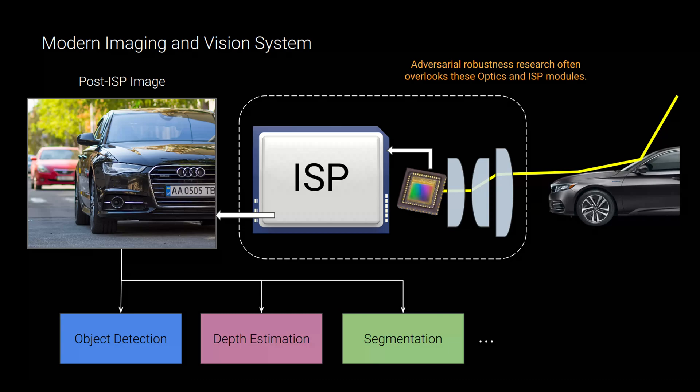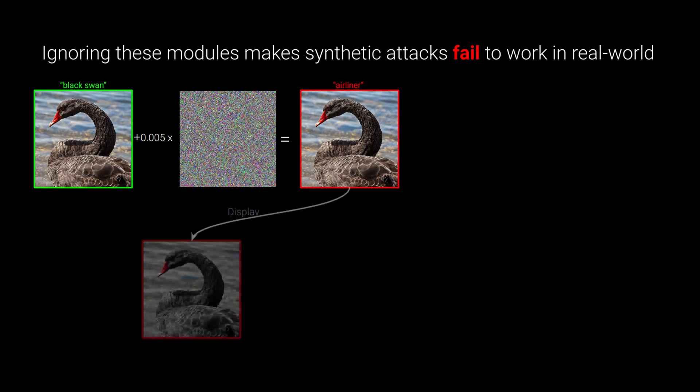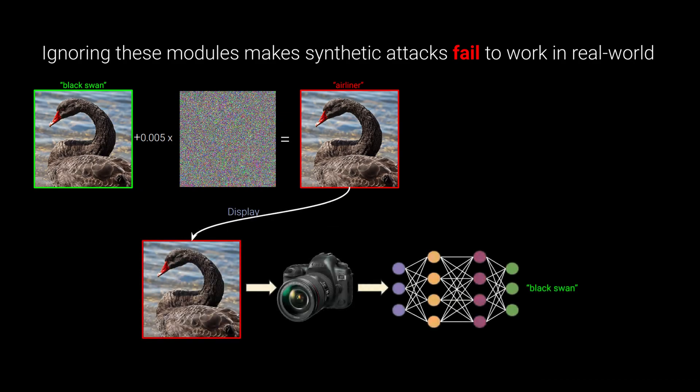Considering adversarial attacks, neglecting these components results in two problems. First, without considering these modules in the camera pipeline, synthetic attacks, such as projected gradient descent, fail to generalize to the real world. For instance, the captured version of this adversarial image is unable to deceive the classifier that was initially targeted.